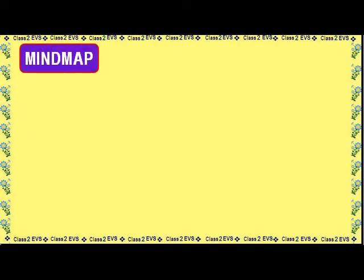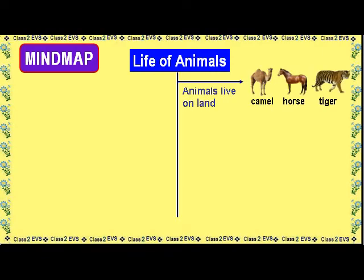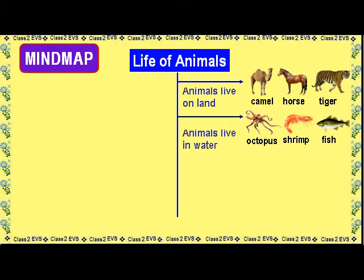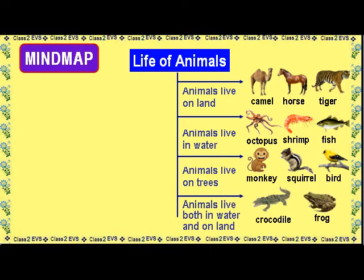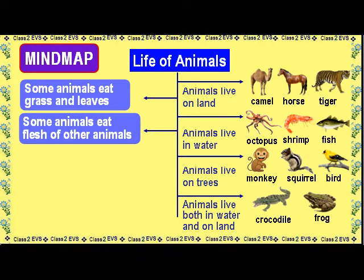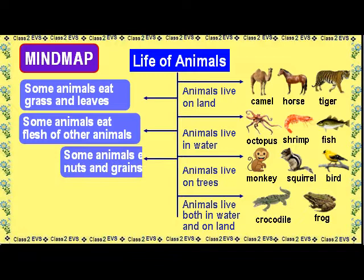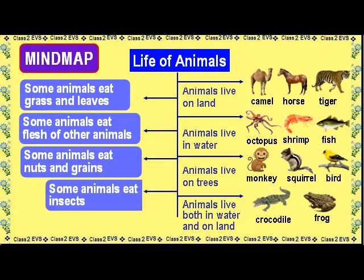Mind Map: Life of Animals. Animals live on land. Animals live in water. Animals live on trees. Animals live both in water and on land. Some animals eat grass and leaves. Some animals eat flesh of other animals. Some animals eat nuts and grains. Some animals eat insects.